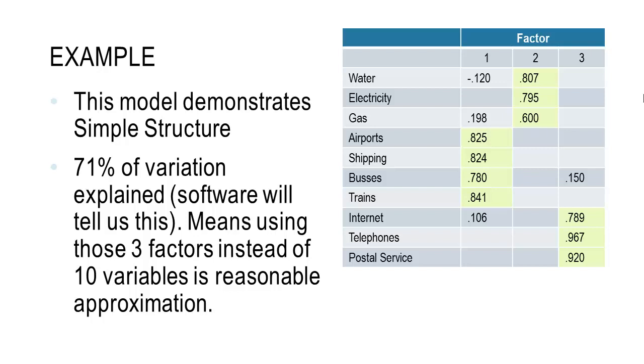We can see that each factor has at least three items with high scores. And we can see that each item only has high scores on one factor. So it means that it has simple structure. Now instead of talking about these 10 different items, it's going to be a lot easier for us to talk about the three factors instead.